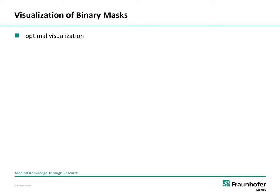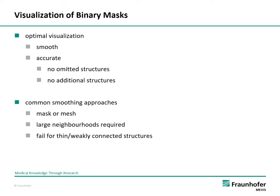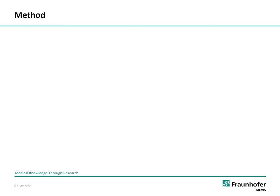An optimal visualization should be smooth and accurate, which means that no structure should be added or omitted. Common smoothing approaches work on the mask or on the mesh, and often large neighbourhoods are required to get a smooth result. All these approaches fail for thin or weakly connected structures. In our method, we derive a signed distance function to get better results with the marching cubes algorithm.